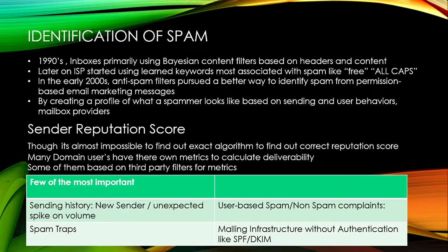By 2000, both spammers and ISPs had become smarter. ISPs started using permission-based email marketing and improved spam identification by actually profiling spammers versus non-spammers based on their behavior. They analyzed different sorts of messages from spammers, identified typical behaviors, keywords, sending times, and how they use marketing platforms and sender profiles. All this information was captured, analyzed, and built into algorithms to categorize senders as spammers.